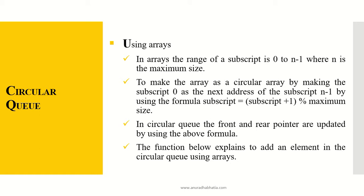In arrays, the range of the subscript is 0 to n minus 1, where n is the maximum size of the array. To make an array circular, we make subscript 0 the next address after subscript n minus 1, using the formula: subscript = (subscript + 1) mod maximum size.